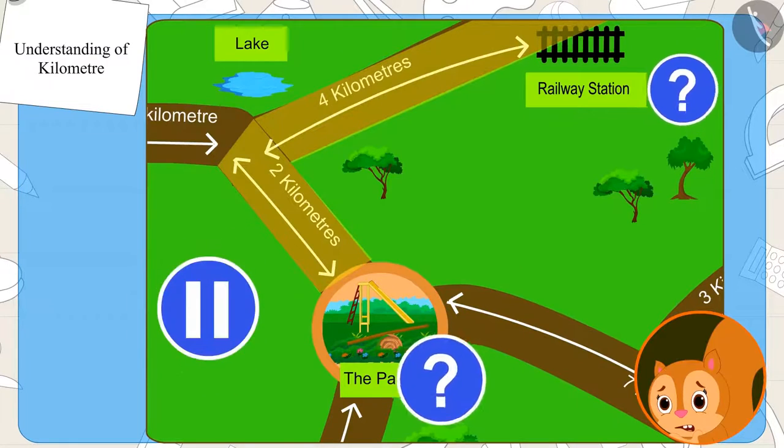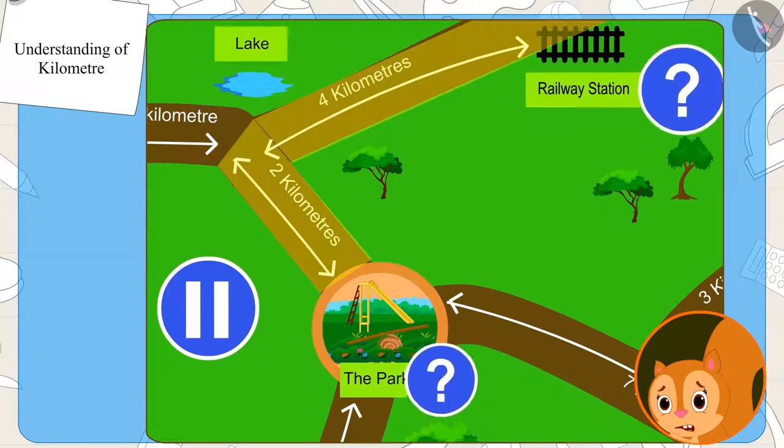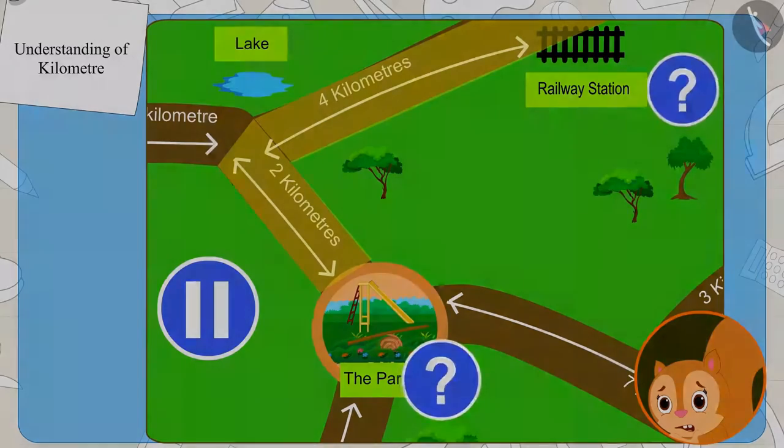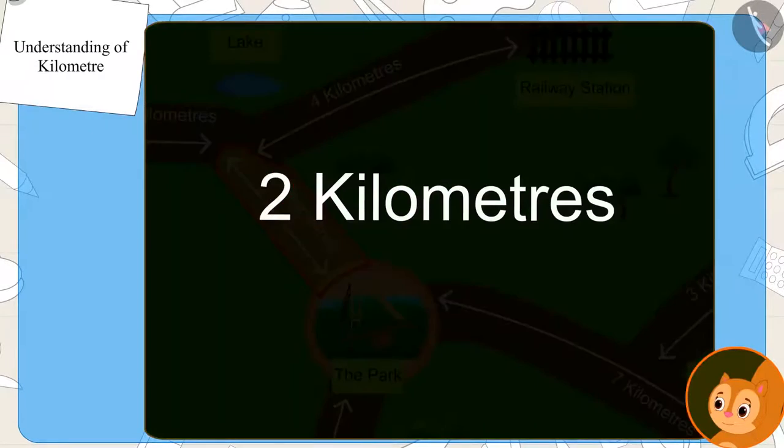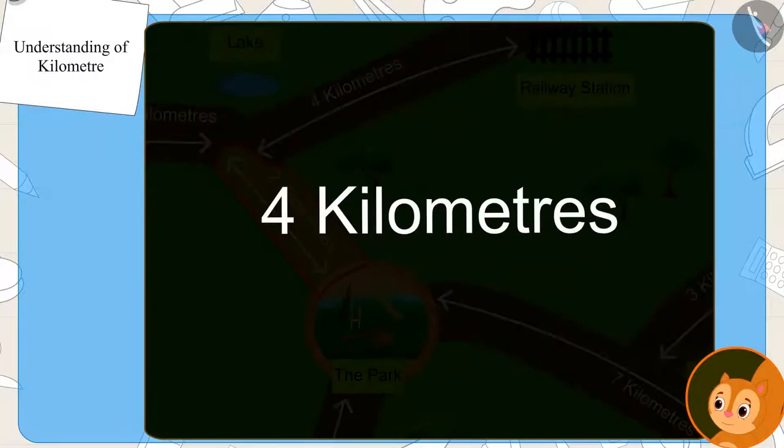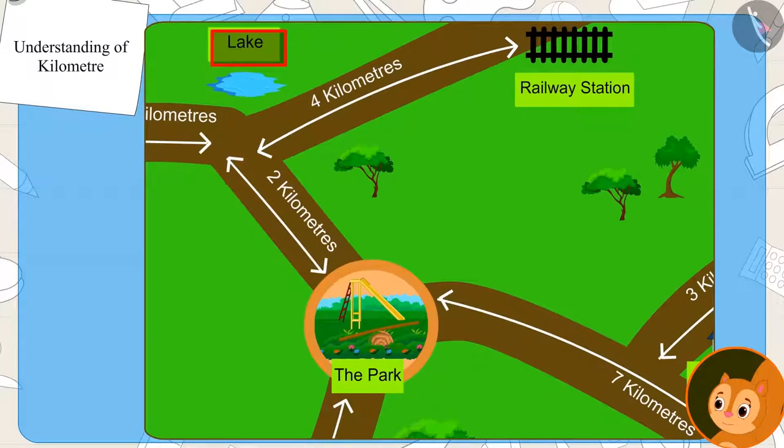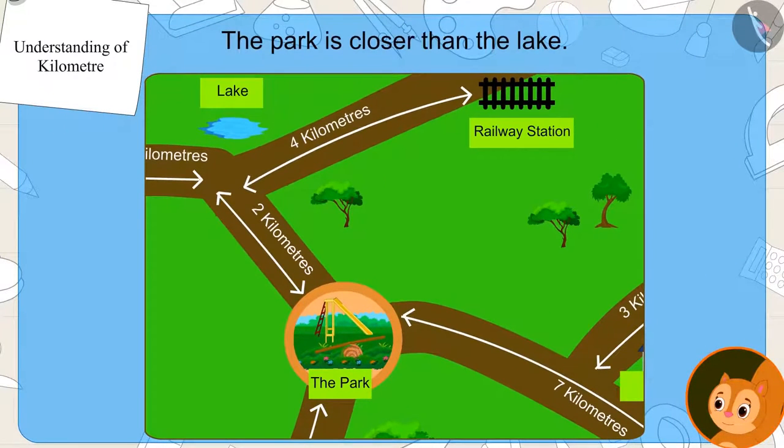If you want, you can pause the video and find the answer. Well done, kids. The answer you found is correct. Because two kilometers is less than four kilometers, the park is closer to the lake.